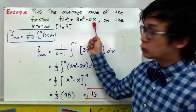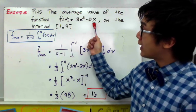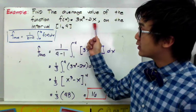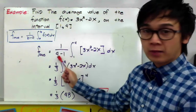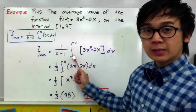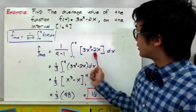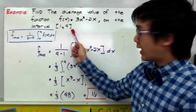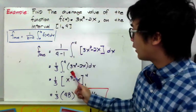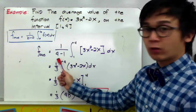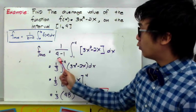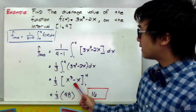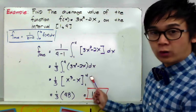By direct substitution, we'll be able to find the average value of this particular function. So we have 1 over 4 minus 1 times the integral of 3x squared minus 2x dx from 1 through 4. By evaluating the integral and simplifying our fraction, we'll have 1 third times x cubed minus x from 1 through 4.